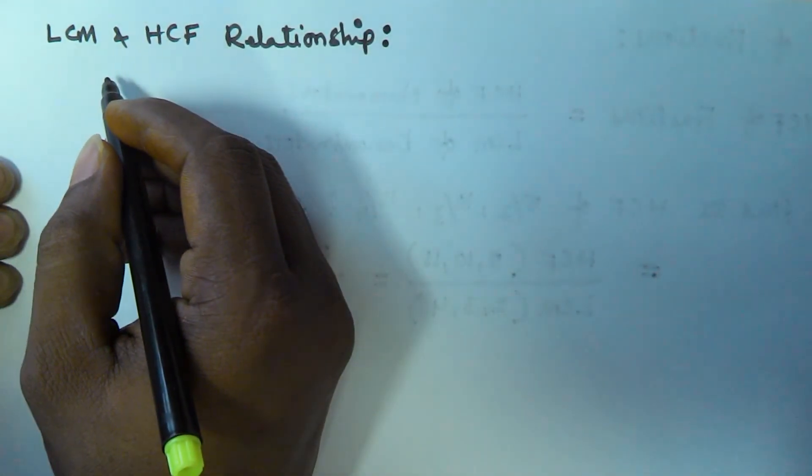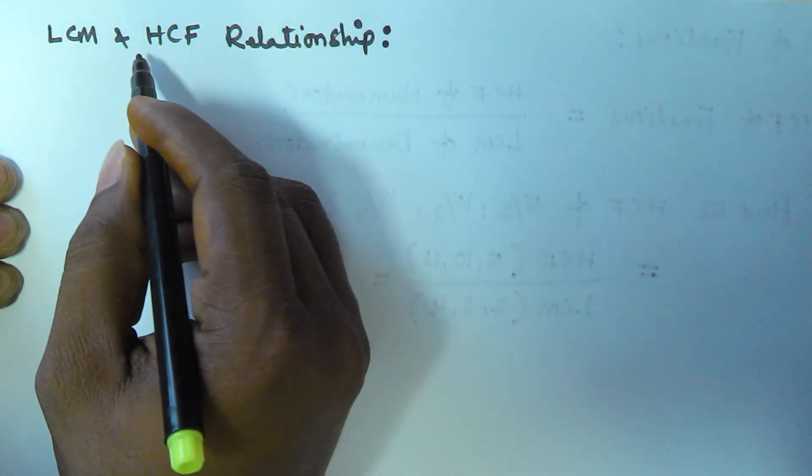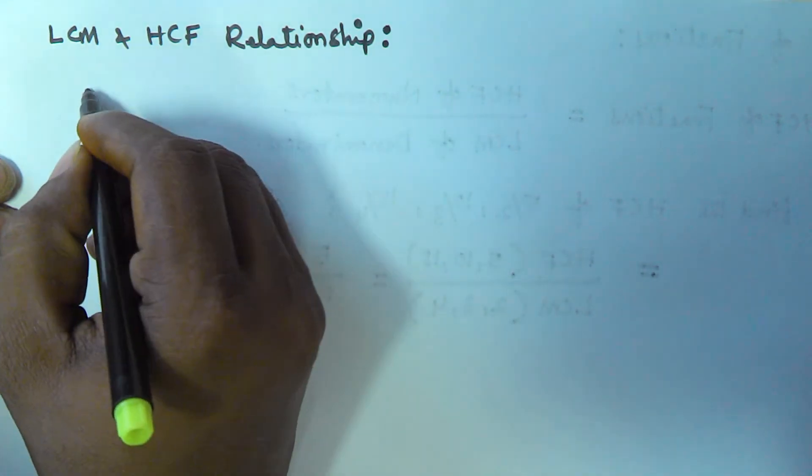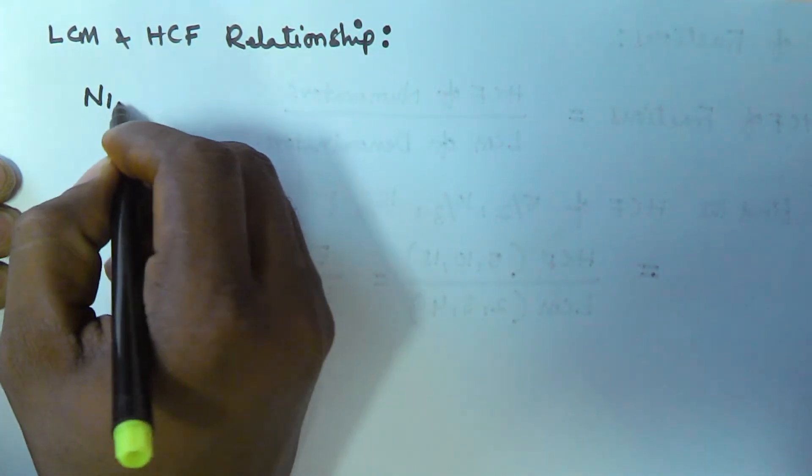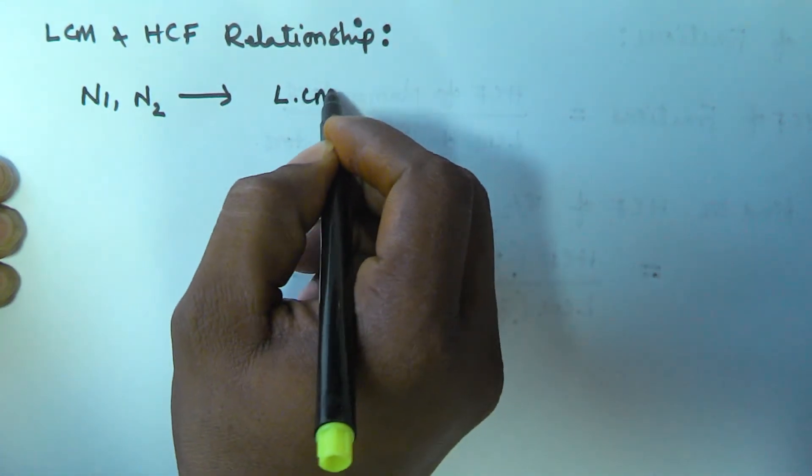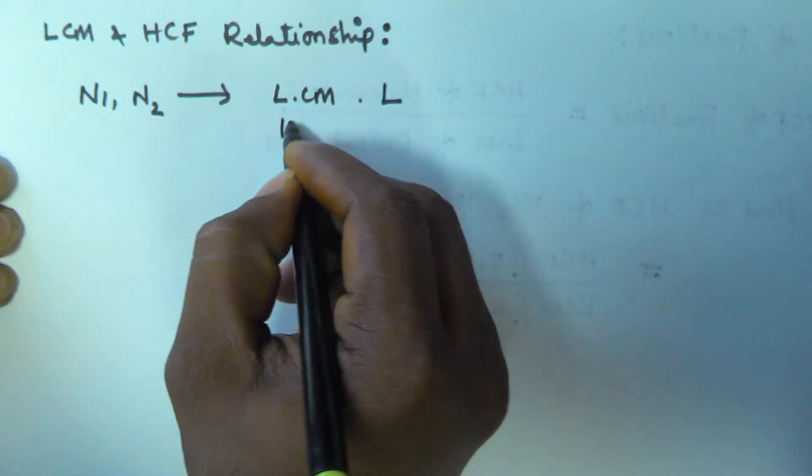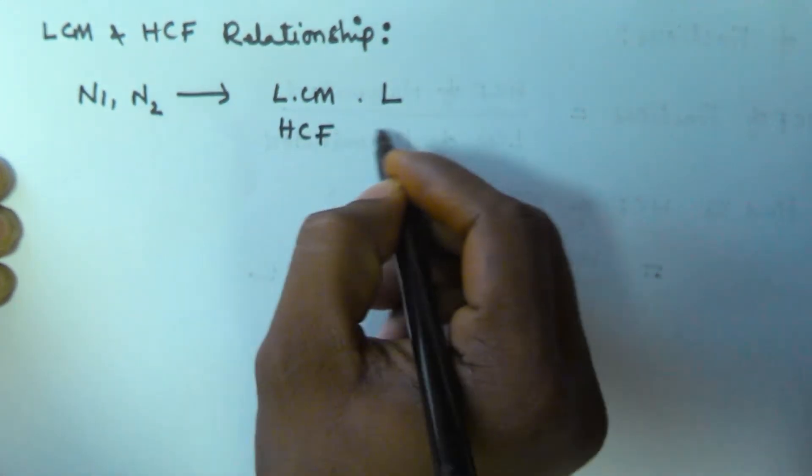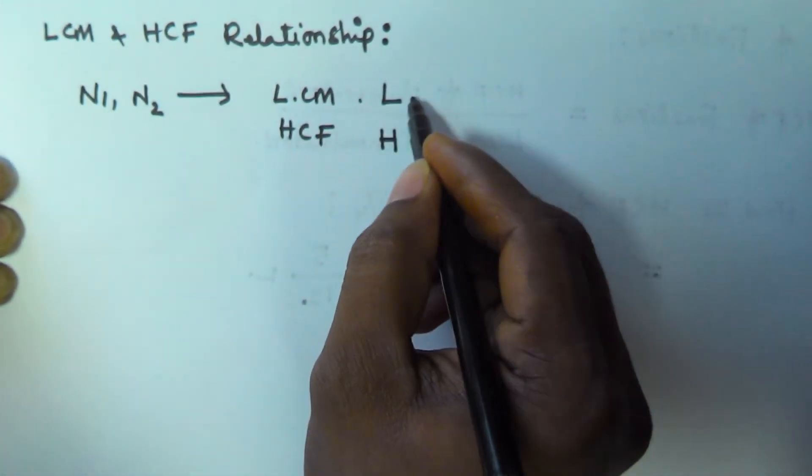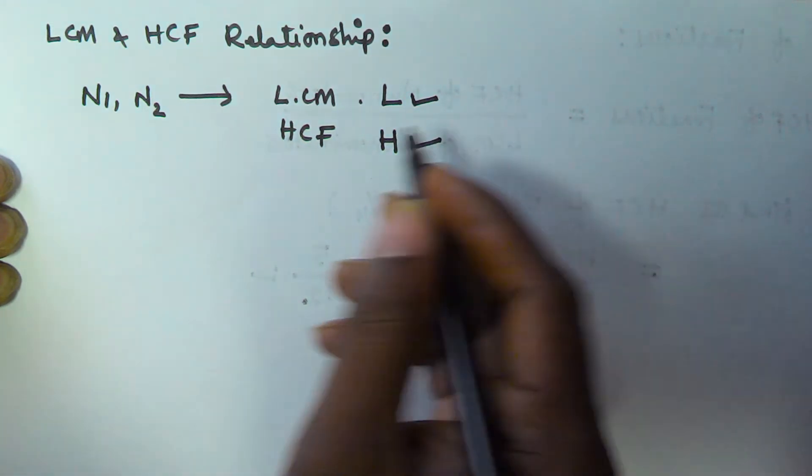Hello friends, in this video we will see the relationship between LCM and HCF of two numbers. Let us assume there are two numbers, N1 and N2, and the LCM of these two numbers is L and HCF of these two numbers is H. Then the relationship between these two numbers and LCM and HCF is like this: